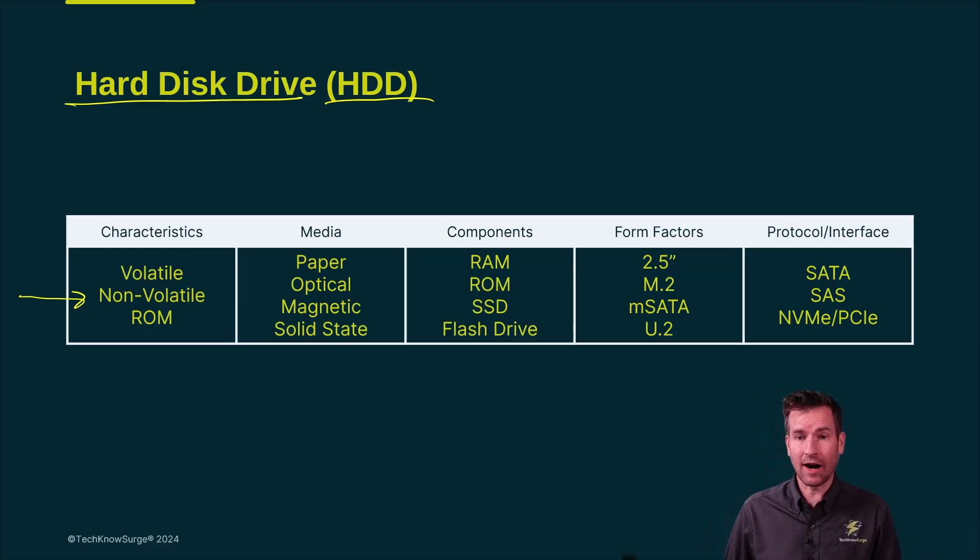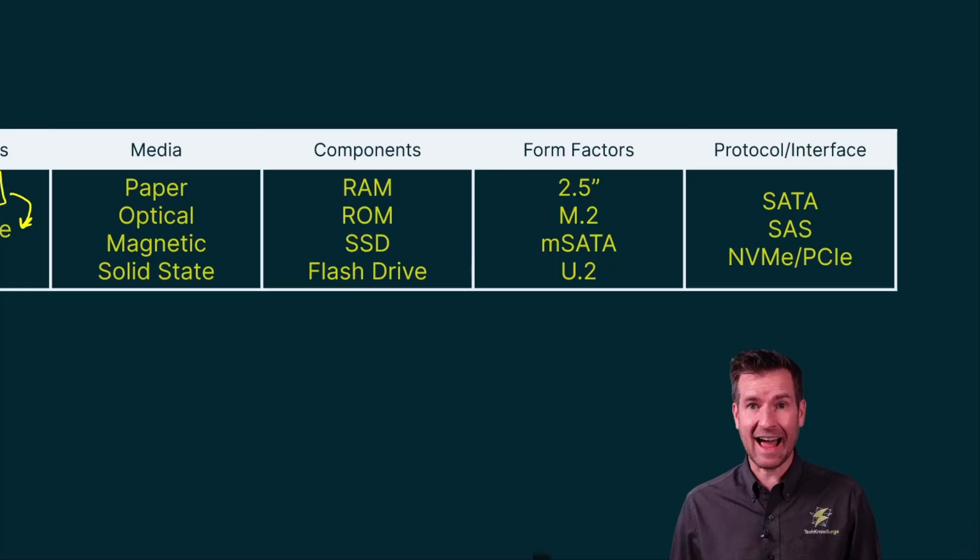Although I will mention there are times if we run out of volatile memory, that is like RAM, sometimes what it'll do is it will create some storage space on the non-volatile memory, in this case an HDD, so that way your computer can still operate. It's not an ideal situation because this type of memory that we have on our computer is much slower.